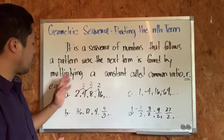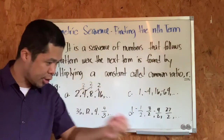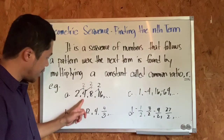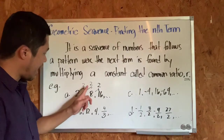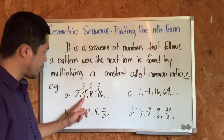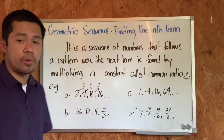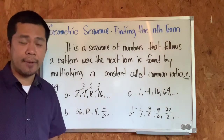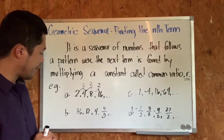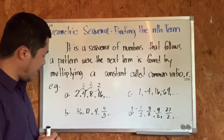Therefore, A is a geometric sequence. That number 2 is the number we multiply to each term to get the next term: 2 times 2 is 4, times 2 is 8, times 2 is 16. Now let's look at letter B — what is the common ratio of letter B?